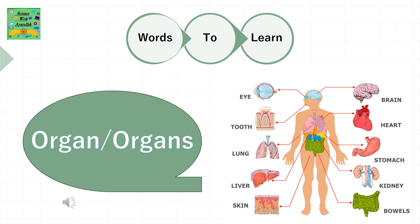Organ. Examples of organs include: eye, tooth, lung, liver, skin, brain, heart, stomach, kidney, and bowels. These are all organs.